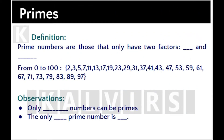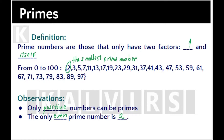Prime numbers are those that only have two factors: one and itself. Only positive numbers can be primes, and the only even prime number is 2, which is also the smallest prime. As a result, any prime number greater than or equal to 3 is always odd.